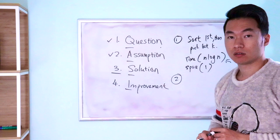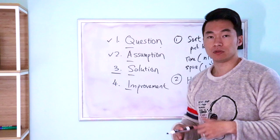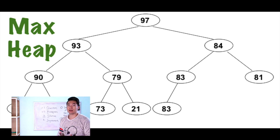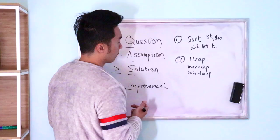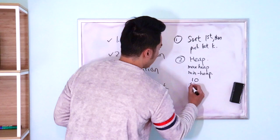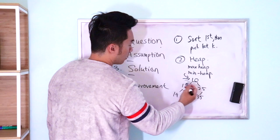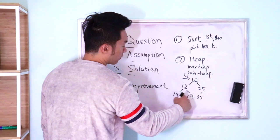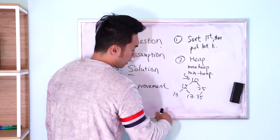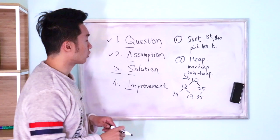How would a heap fit into this? There's the idea of a min heap and a max heap. A max heap guarantees that whatever is at the top is the biggest. A min heap is the opposite. For example, with a min heap containing 10, 19, 35: the element at the top is smaller than all other elements, and this holds recursively. So 15 is smaller than everything below it, 25 is smaller than everything below it, and so on. That's the guarantee you get from the heap structure.